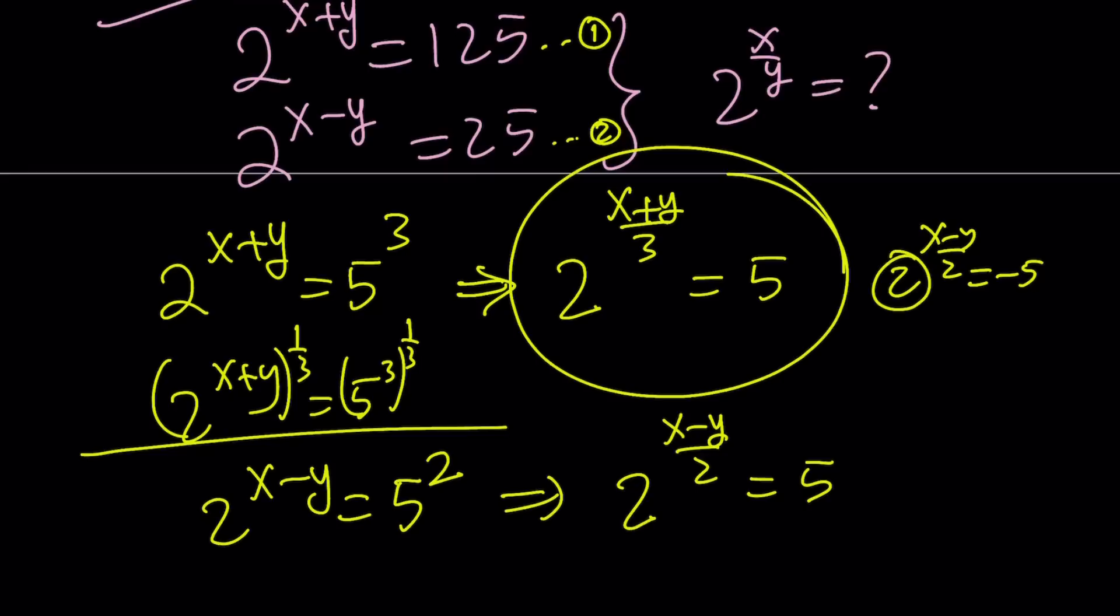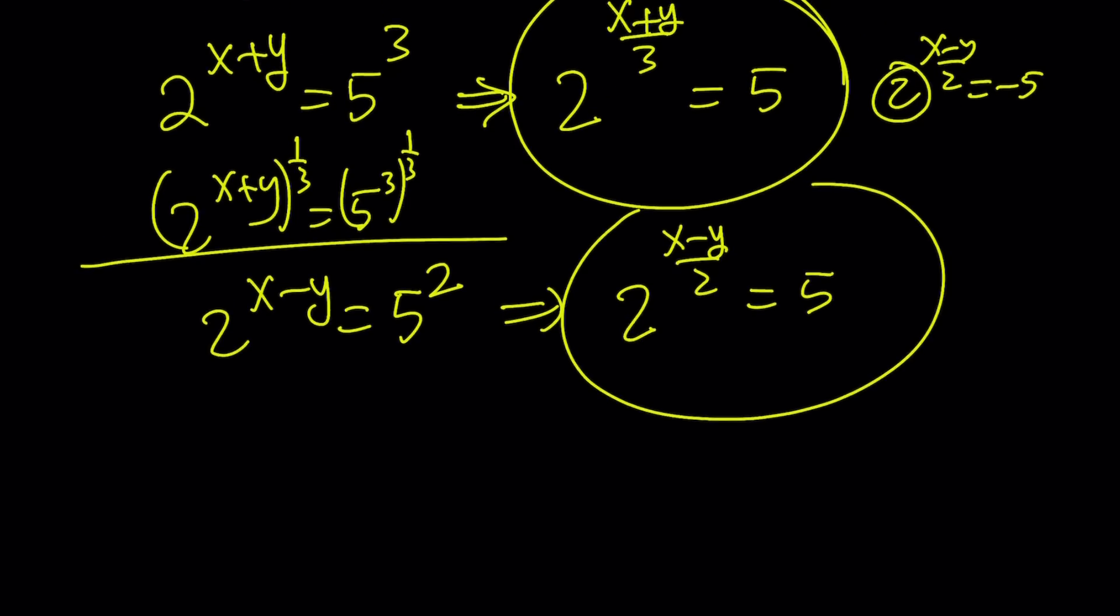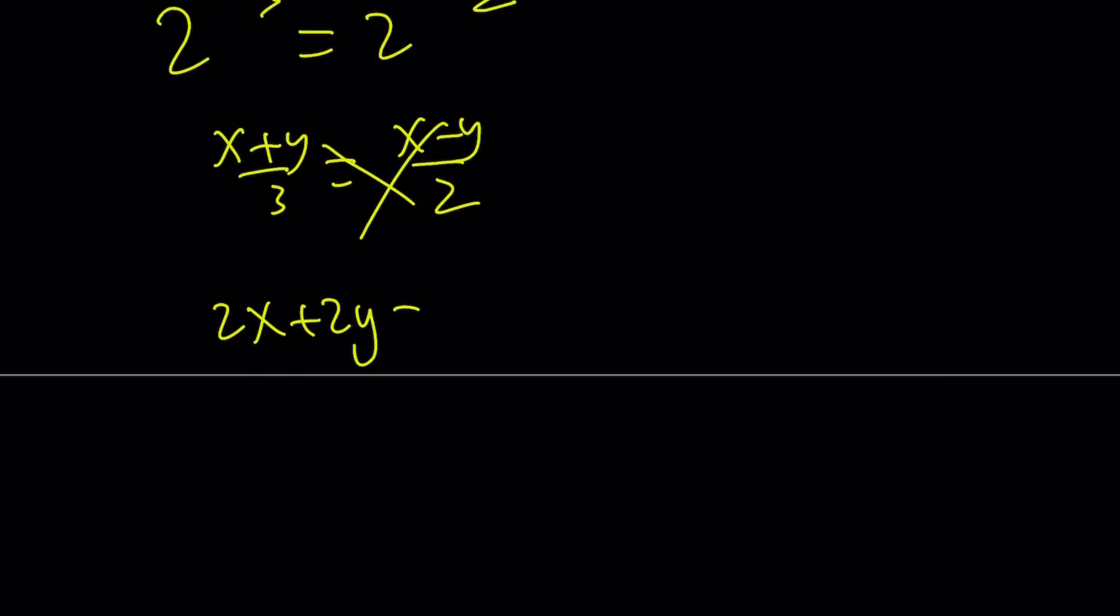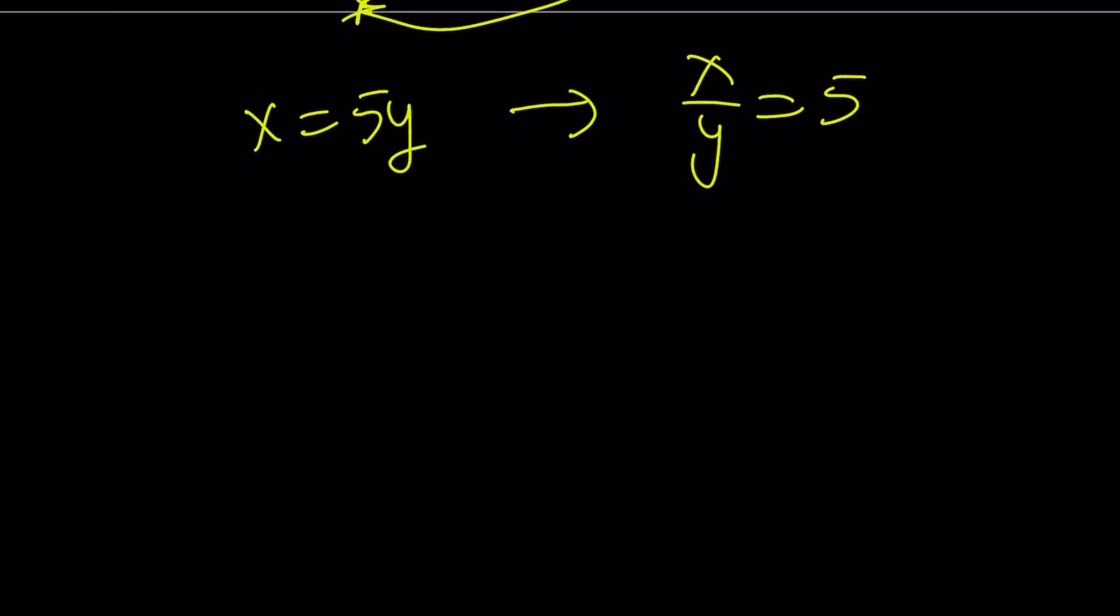What am I getting from here? I got the 5 twice. If two things are equal to the same thing, then they're equal. Which means 2 to the power of x plus y over 3 equals 2 to the power of x minus y over 2. Which means x plus y over 3 equals x minus y over 2. Now you can do cross-cross applesauce. 2x plus 2y equals 3x minus 3y. Put the x's together and put the y's together. You get x equals 5y. Which means x over y equals 5.